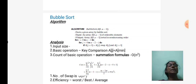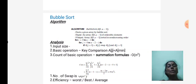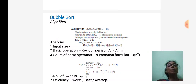Based on the comparison, the largest element is moved to the right end of the list. The third step is counting how many times the basic operation is executed. The number of times the basic operation executes is analyzed using summation formulas.